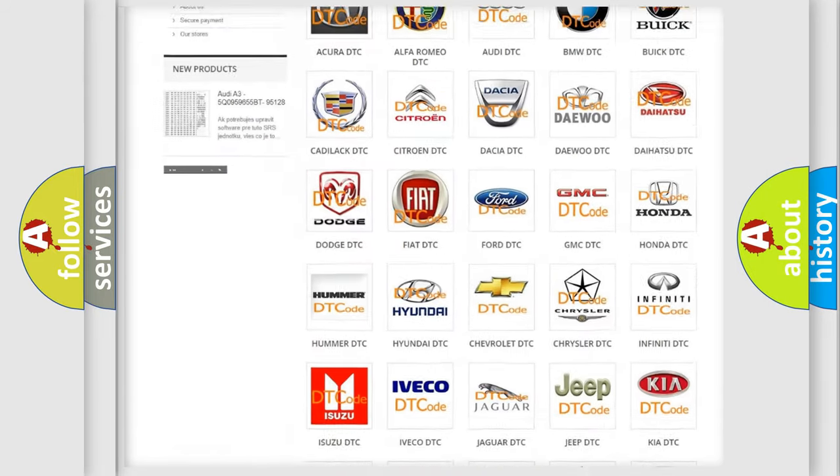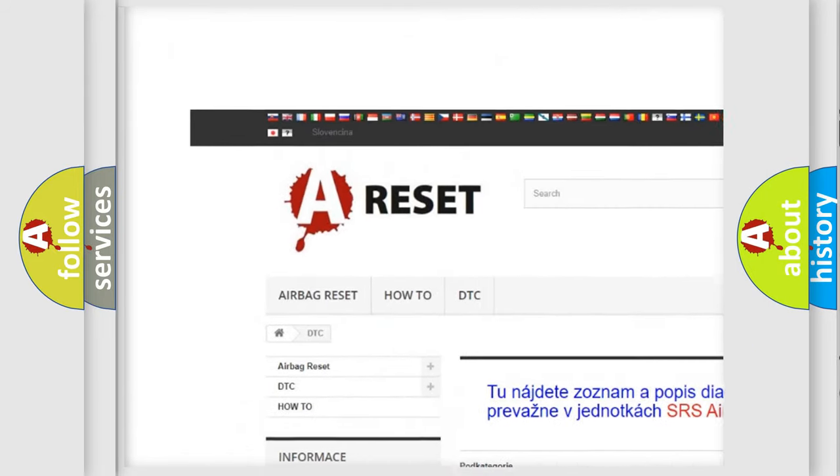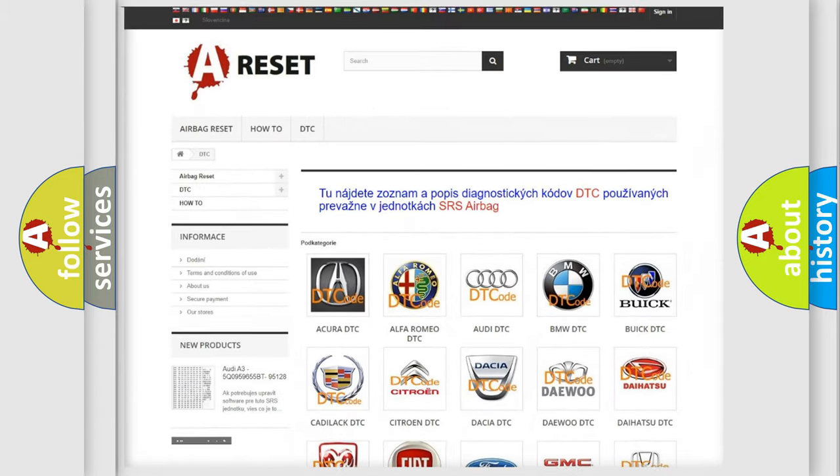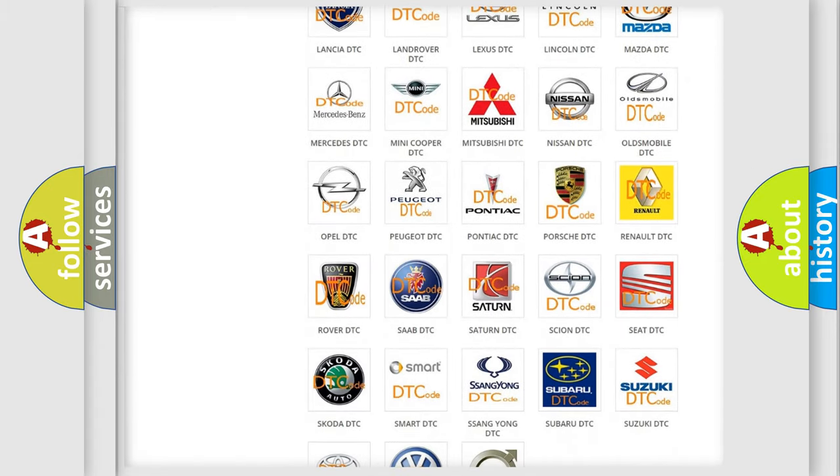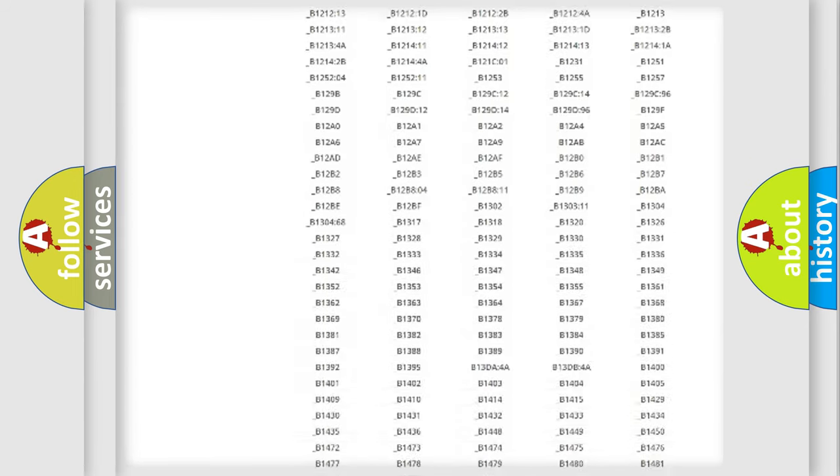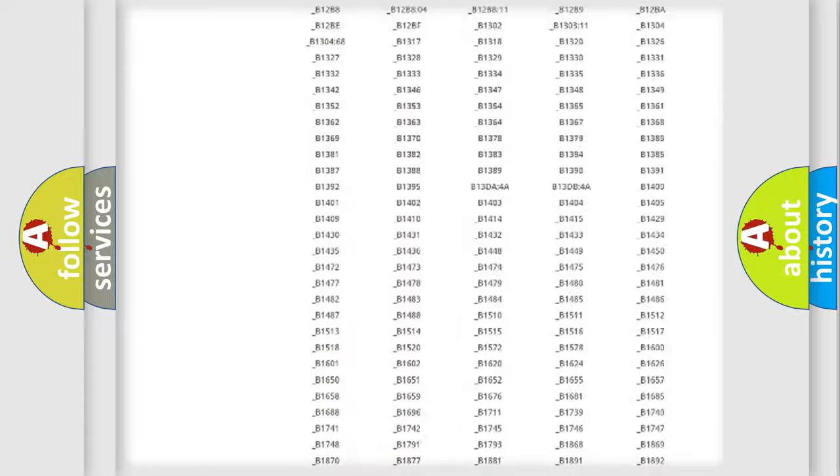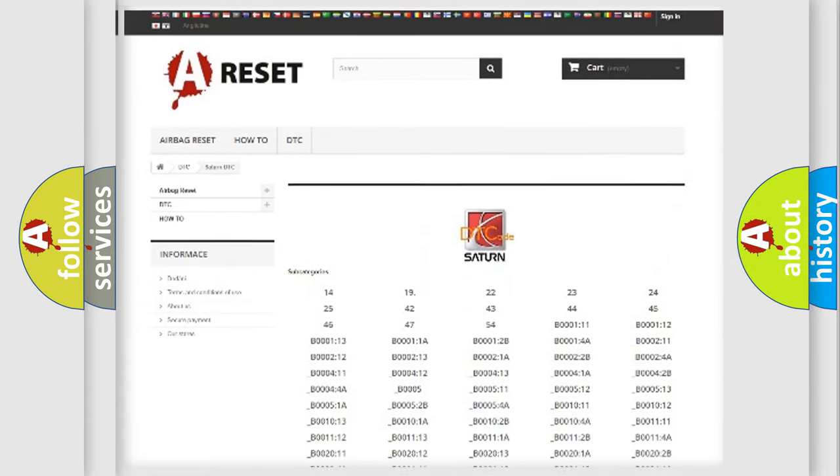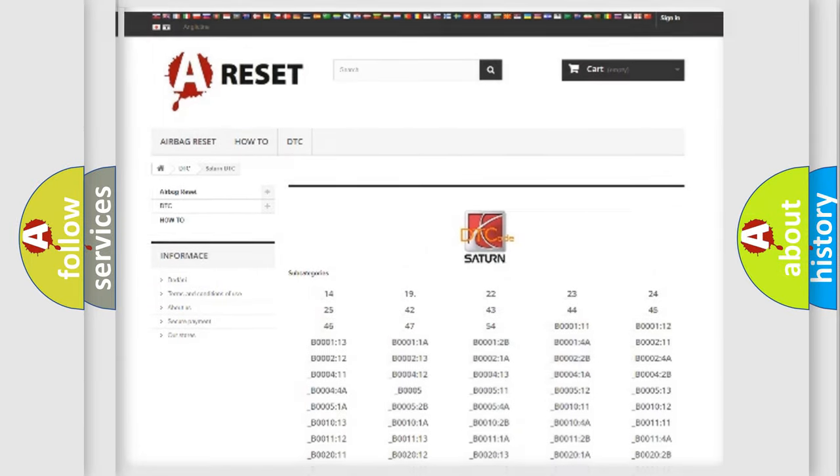Our website airbagreset.sk produces useful videos for you. You do not have to go through the OBD2 protocol anymore to know how to troubleshoot any car breakdown. You will find all the diagnostic codes that can be diagnosed in Saturn and vehicles, also many other useful things.